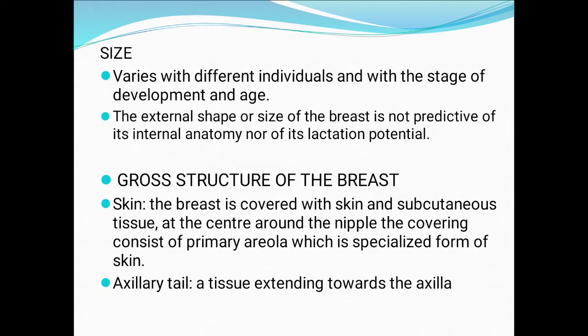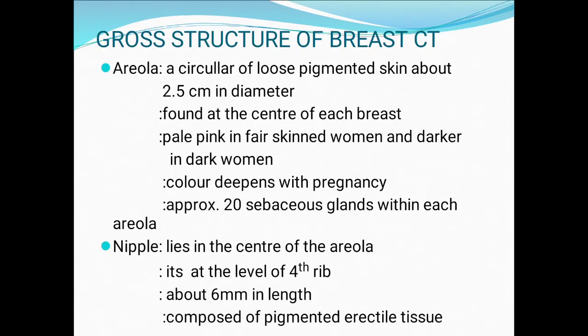Next, gross structure of the breast. Skin: the breast is covered with skin and subcutaneous tissue. At the center around the nipple, the covering consists of primary areola, which is a specialized form of skin. Then the axillary tail — tissue extending towards the axilla. The areola is a circular area of loose pigmented skin about 2.5 cm in diameter, found at the center of each breast — pale pink in fair-skinned women and darker in dark women.